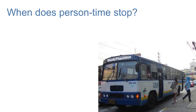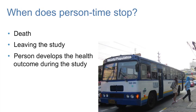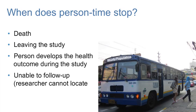A person in a study can stop contributing person time for a variety of reasons, such as death, leaving the study, moving to a different country, or the person develops the disease or health outcome during the study, or the researcher is unable to follow up with them, or the researcher cannot locate the person.